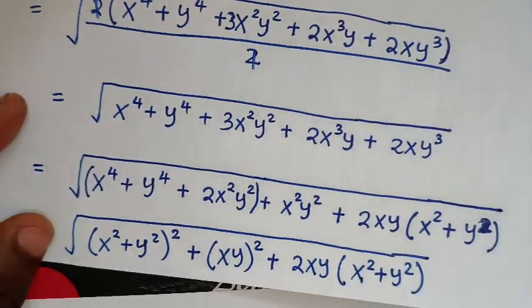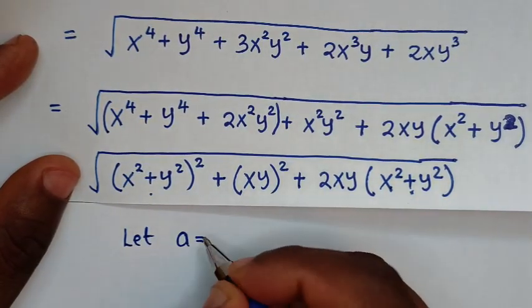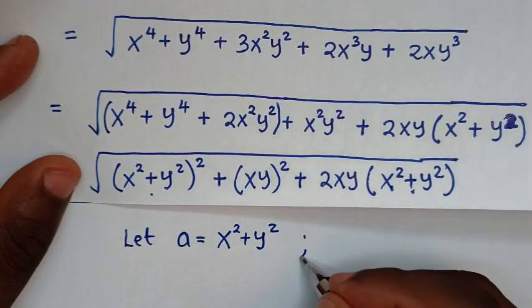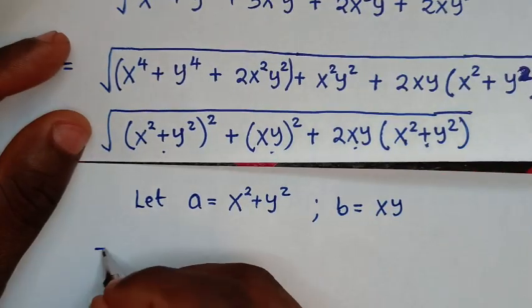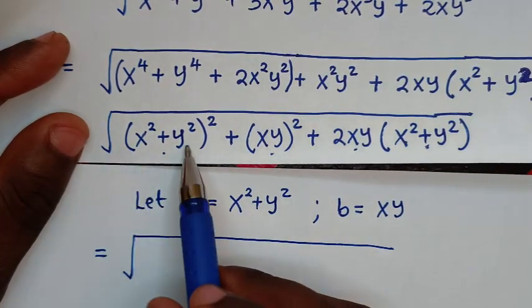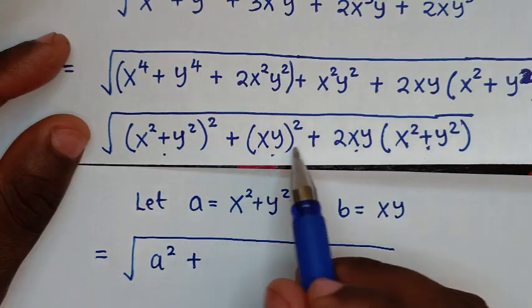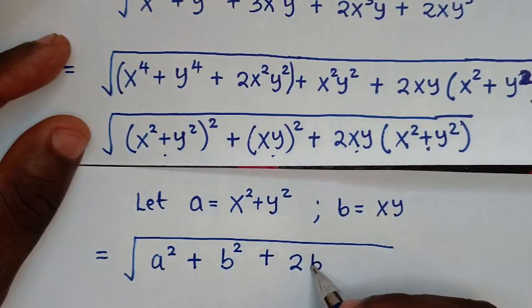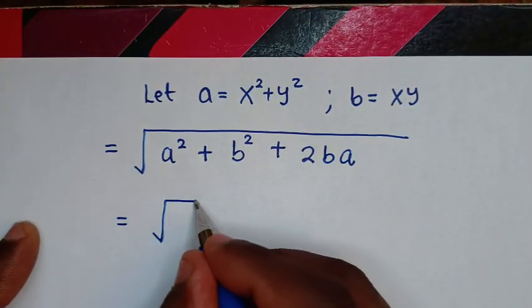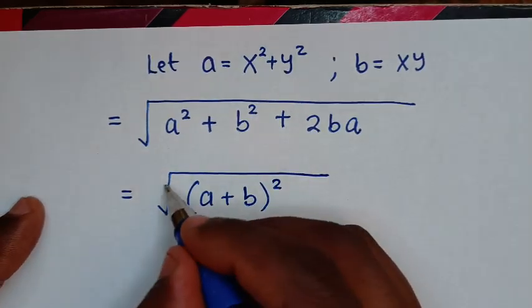In the next step, we notice x squared plus y squared is common. We let a equal to x squared plus y squared, and b equal to xy. So the expression becomes the square root of a squared plus b squared plus 2ab, which is the expansion of (a plus b) squared. So the square root cancels the square.